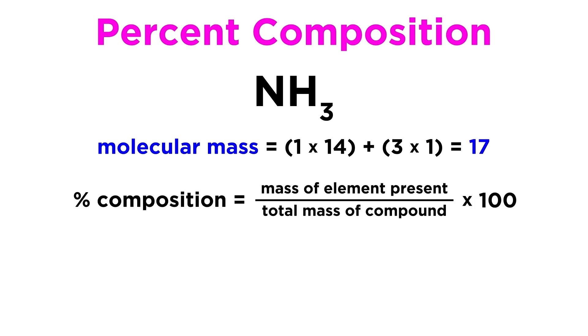We can simply calculate the mass of each element present in the compound over the total mass of the compound, to get the percent composition of the compound.